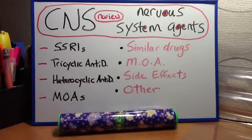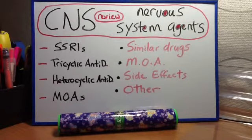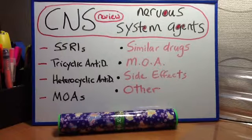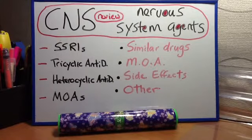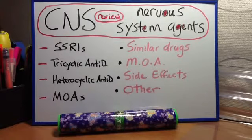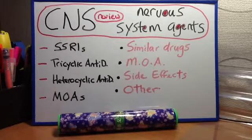Next: monoamine oxidase inhibitors. Similar drugs include phenelzine and isocarboxazid. Mechanism of action: levels of serotonin, dopamine, and norepinephrine increase. Used for atypical depression. Other notable points: hypertensive crisis is a risk, and selegiline is used as an adjunct treatment for Parkinson's disease.